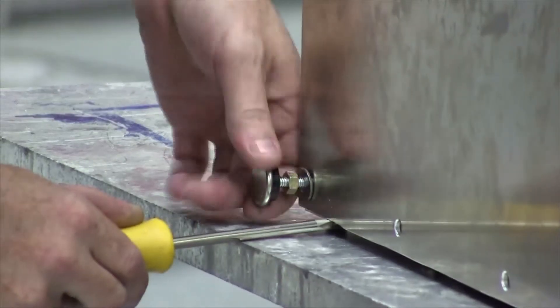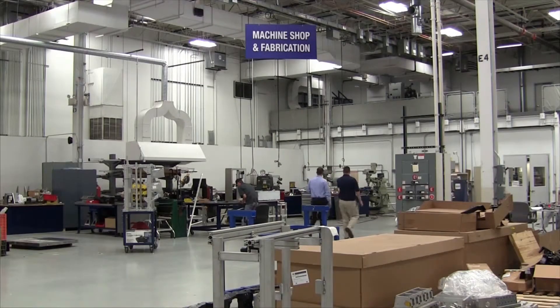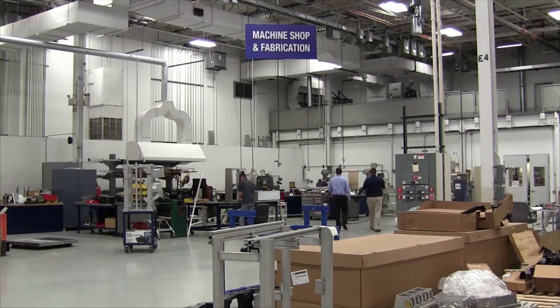In the fixturing and fabrication area we're able to develop fixtures to hold different components and parts in the same position they're going to be in in the field. This is of primary importance for the automotive industry where different components and parts rest in the vehicle in different orientations.